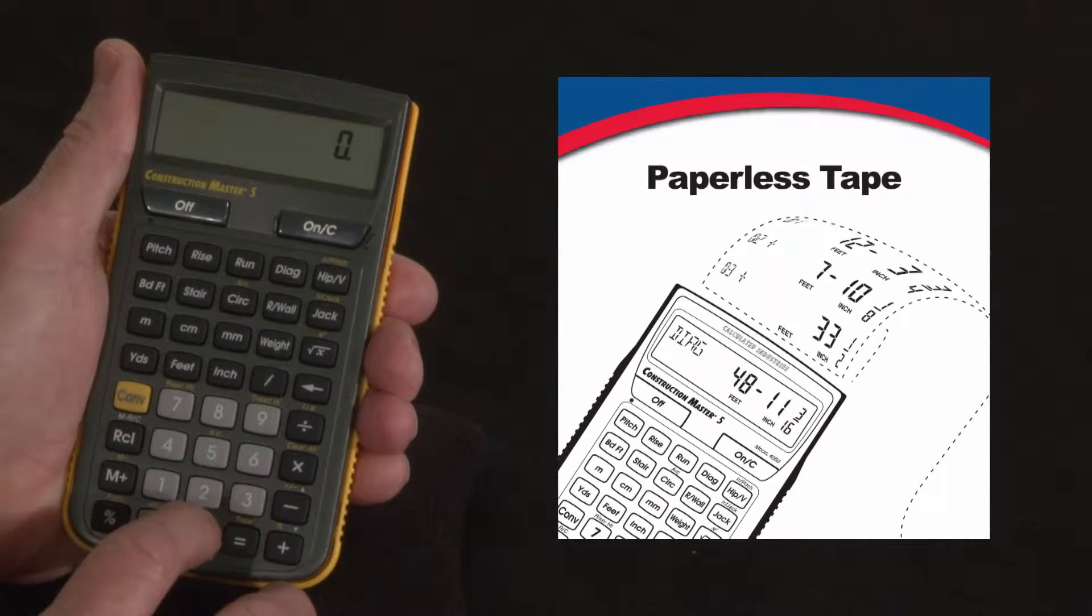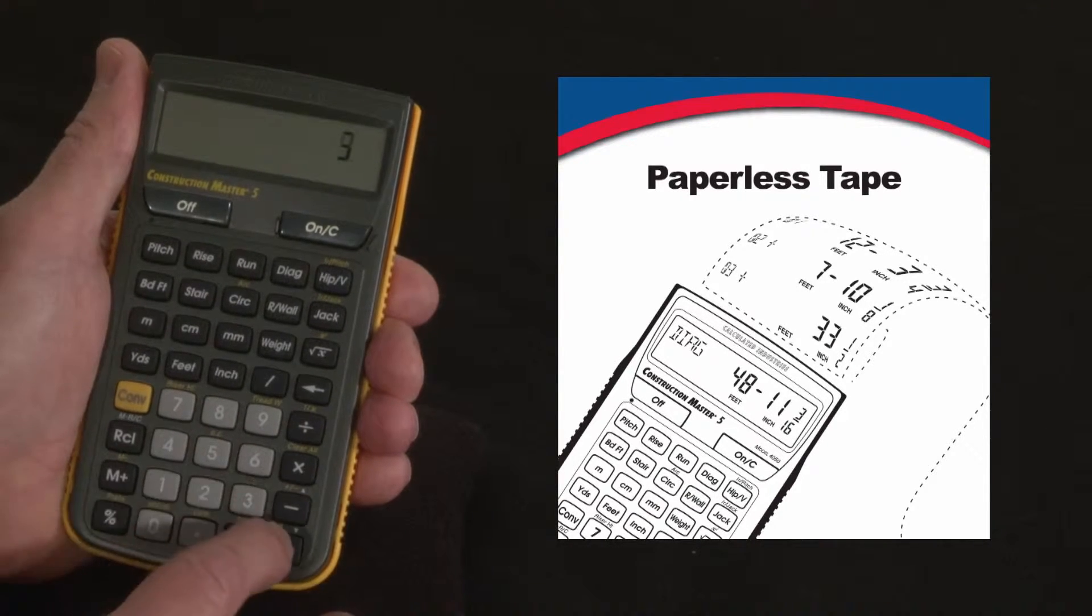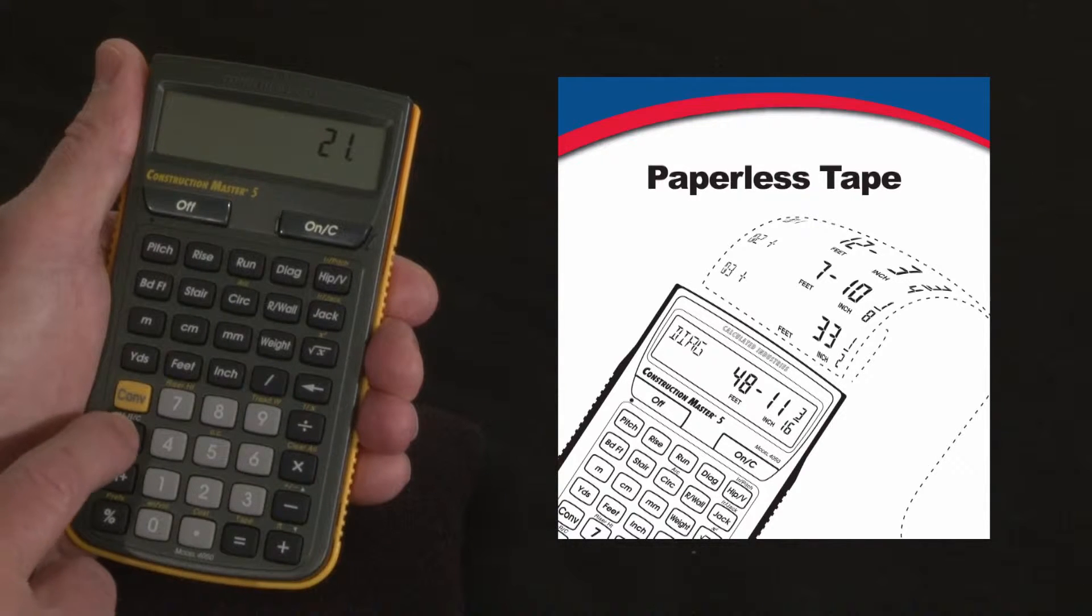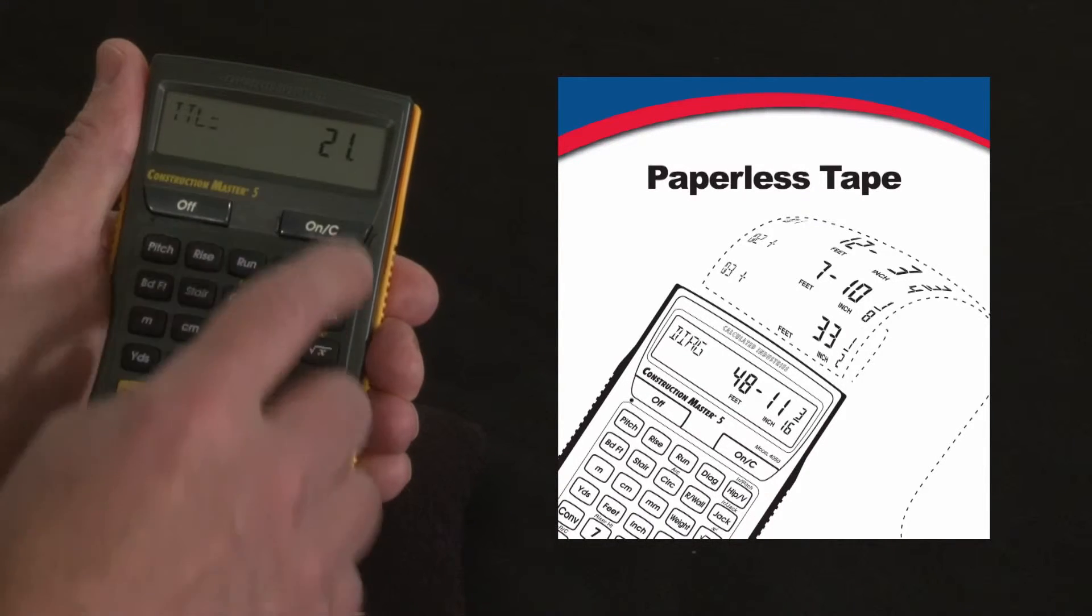Let's do a quick string of calculations. Two plus three plus four plus five plus seven equals a total. Well, that could be right, I'm not sure. Let's check the tape. Recall tape. It says the total is 21.